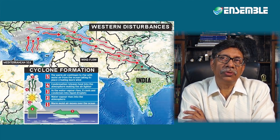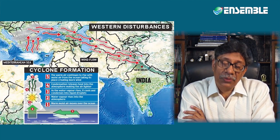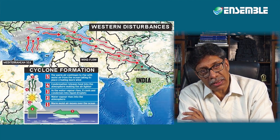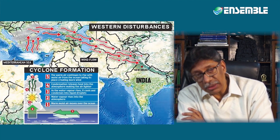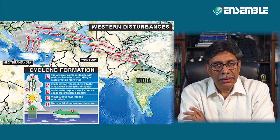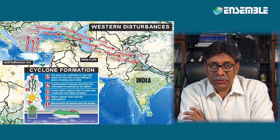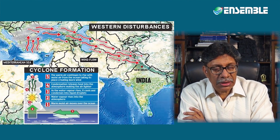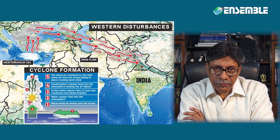Western disturbances first come to western Europe, then to Iran, then to Afghanistan, then to Pakistan, then to India, and then on to China. This is the tract through which western depressions in India move.